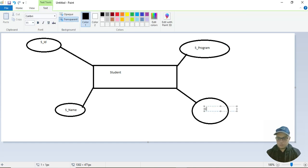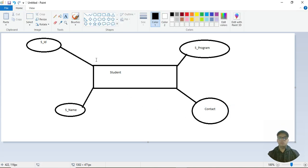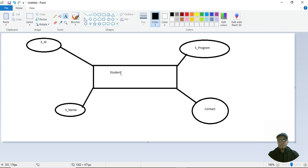Suppose here I have Student ID, here Student Name, here Student Program, and here Student Contact or Email, whatever.